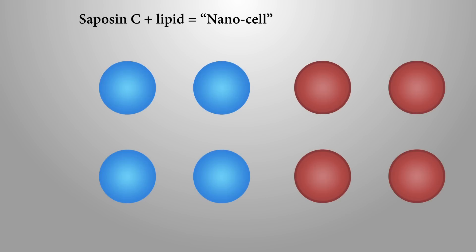Dr. Key created the drug by combining saposin C with a lipid. With this combination, a miniaturized cell, a kind of nano-cell, is formed. In this form, the drug can travel throughout the body, including the brain.